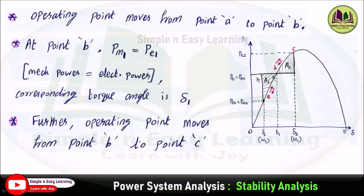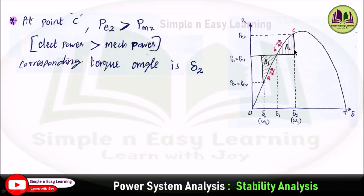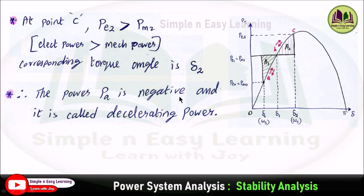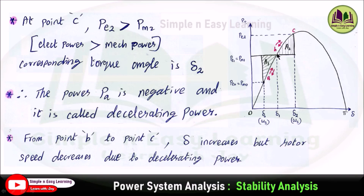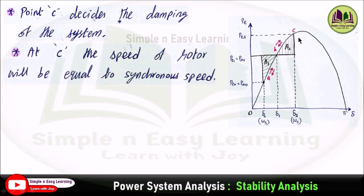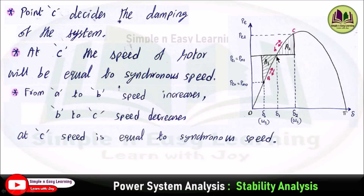At point B, mechanical power Pm1 equals electrical power Pe1, and the corresponding torque angle is delta-1. The operating point then moves from B to C. At point C, electrical power Pe2 exceeds mechanical power Pm1, creating a negative or decelerating power Pa, with torque angle delta-2. From B to C, delta increases but rotor speed decreases due to decelerating power. At point C, the rotor speed equals synchronous speed.